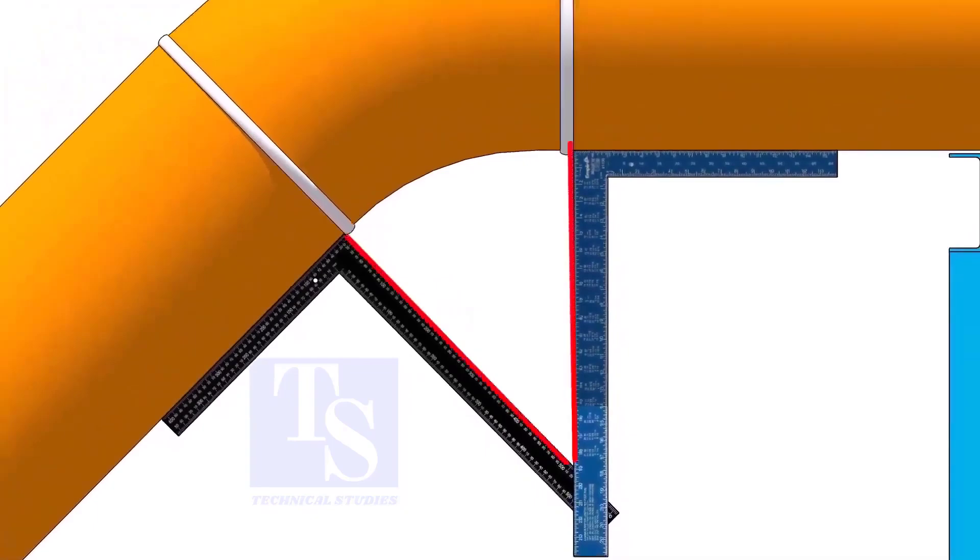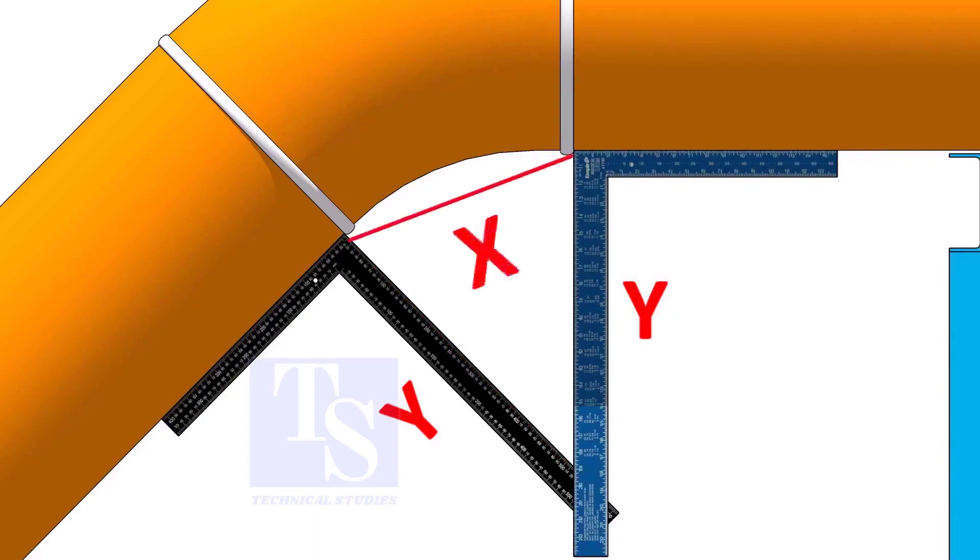Measure the distance from the pipe to the point where the right angles bisect each other. Measure only one side is enough. Now, carefully measure the distance between the corners of the right angles.